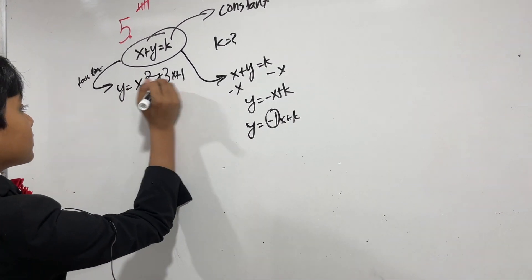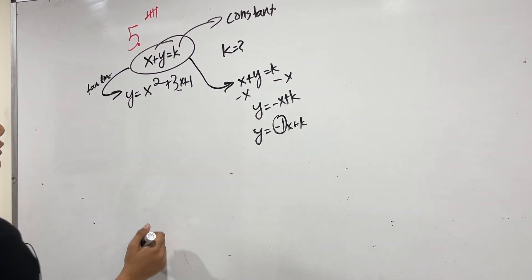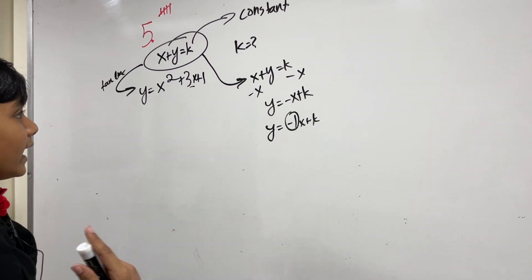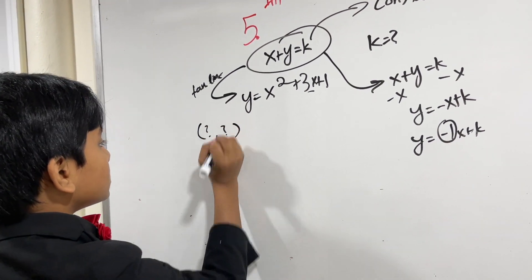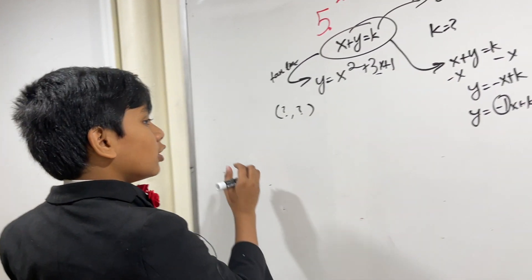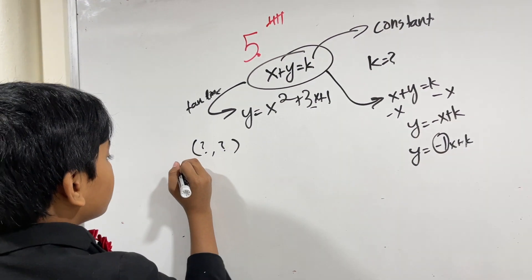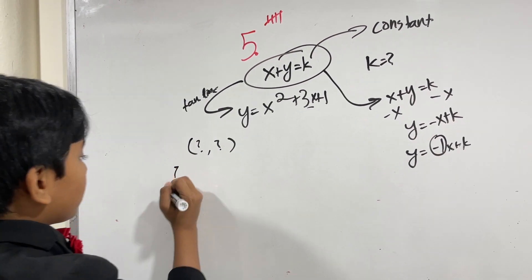Our slope is found by taking the derivative of this and then plugging in a coordinate. So now, if we're given the slope in advance, then we should be able to figure out the coordinates.